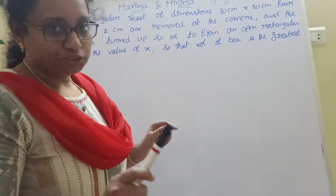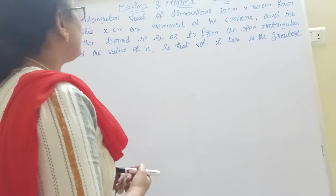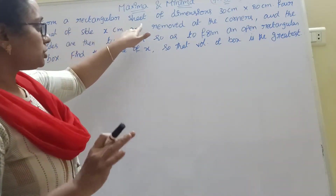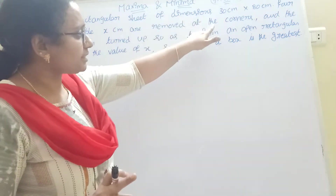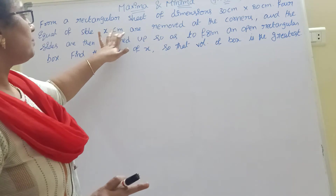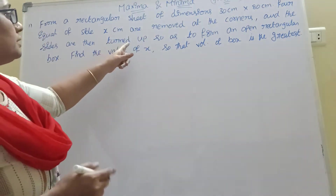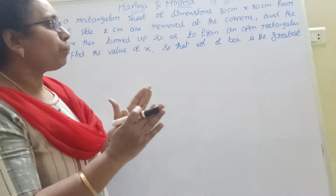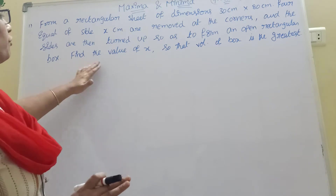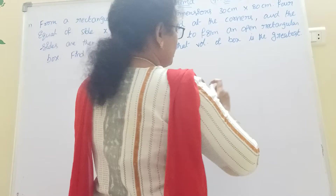Now listen, this is the most important problem from last year's exams — 24th and 23rd. Now the topic is about maximum and minimum. Form a rectangular sheet of dimensions 30 cm into 80 cm. Four equal squares of side x cm are removed at the corners, and the sides are turned up so as to form an open rectangular box. Find the value of x so that the volume of the box is greatest.